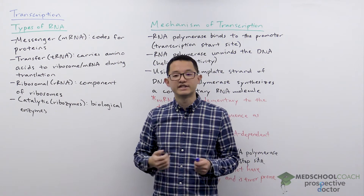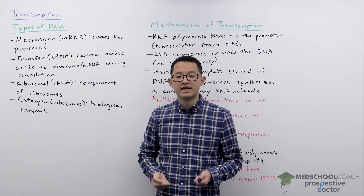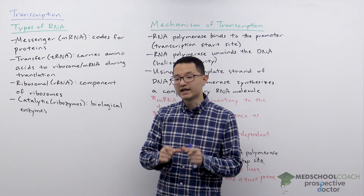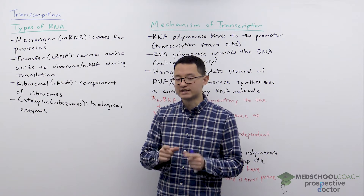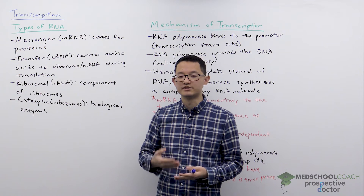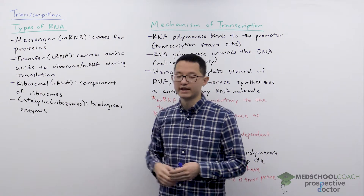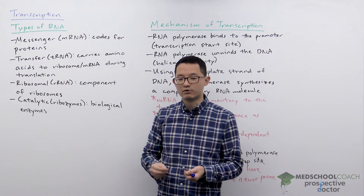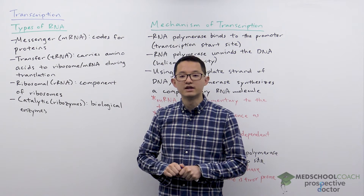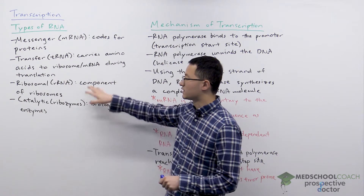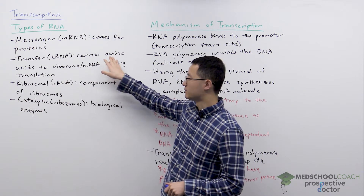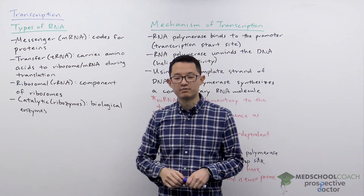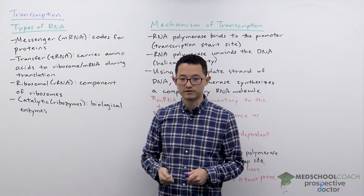Transfer RNA, or tRNA, are RNA molecules that have an anticodon — a sequence that is complementary to codons in the mRNA. The transfer RNA also has a site where an amino acid can be bound. So essentially the role of the tRNA is to carry amino acids to the ribosome-mRNA complex during translation.